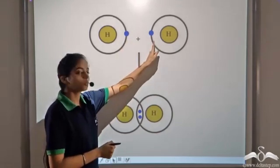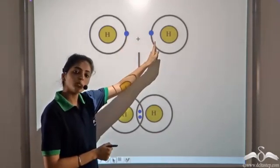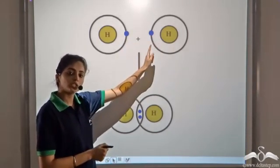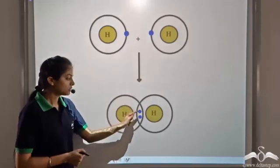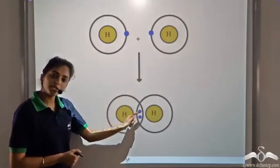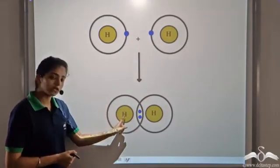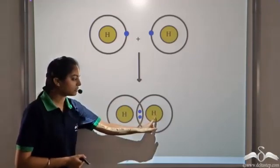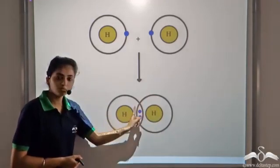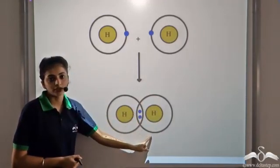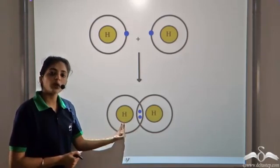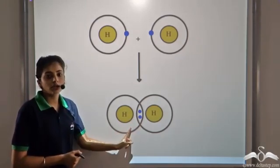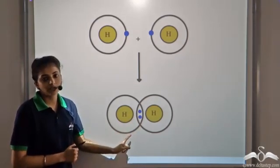So it shares one electron with another hydrogen atom. When both the hydrogen atoms share one electron each, now each hydrogen atom has a duplet structure. So by sharing one electron each, both the hydrogen atoms are stabilized.